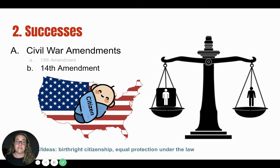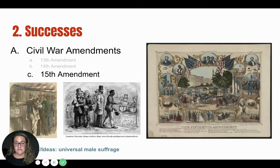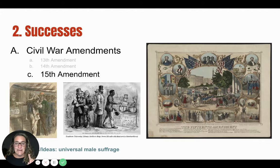The final Civil War amendment passed during this time is the 15th Amendment, often referred to as universal male suffrage. Suffrage means the right to vote, so now all men are able to vote. It states: 'The right of citizens of the United States to vote shall not be denied or abridged by the United States or by any state on account of race, color, or previous condition of servitude.'